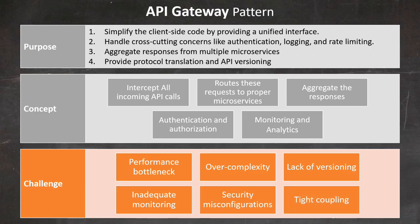There are also challenges from security misconfigurations: incorrectly implementing authentication and authorization can lead to security vulnerabilities, so regularly audit and test security configurations. Finally, tight coupling: designing the API Gateway with too much knowledge of the underlying microservices can lead to tight coupling — strive for loose coupling to maintain flexibility. By addressing these challenges and avoiding common mistakes, organizations can effectively implement the API Gateway pattern to enhance their microservices architecture.